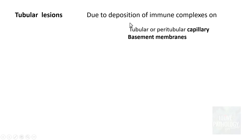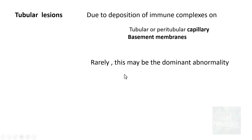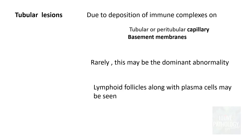Moving on to tubular lesions: these arise from deposition of immune complexes on the tubular or peritubular capillary basement membranes. Very rarely, tubular involvement can be the dominant abnormality. You can sometimes see lymphoid follicles along with numerous plasma cells, which may be a source of autoantibodies. That covers the renal lesions.